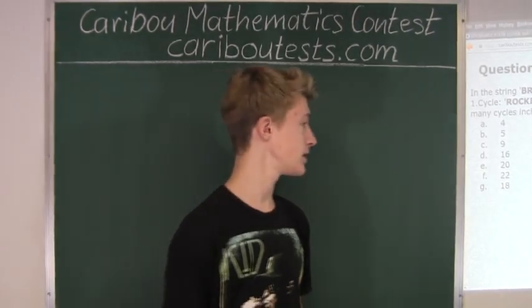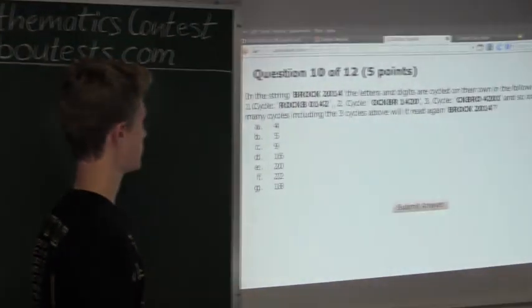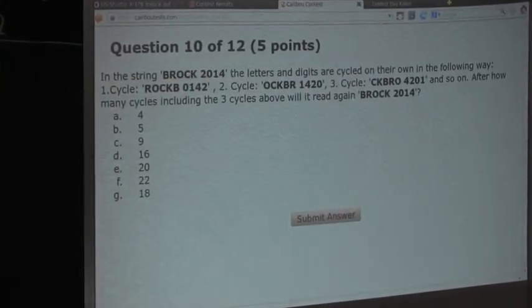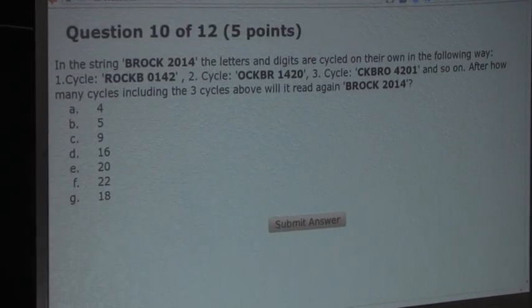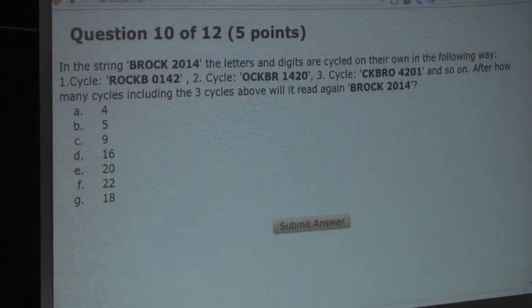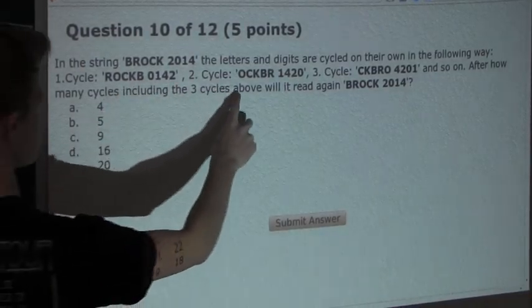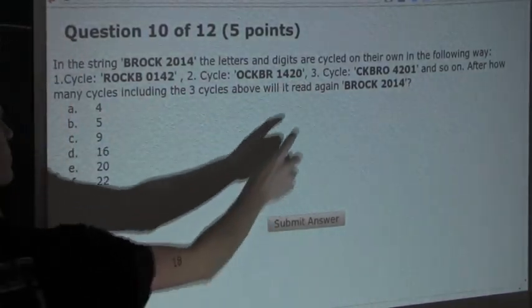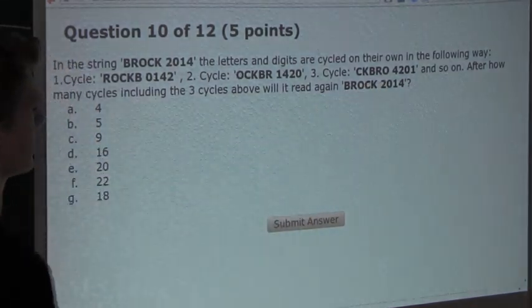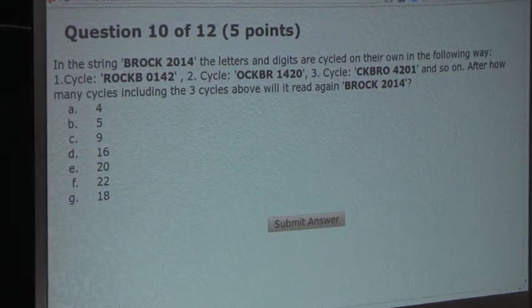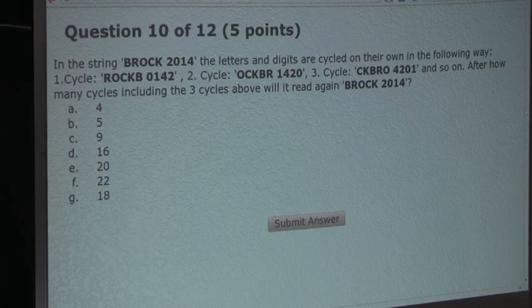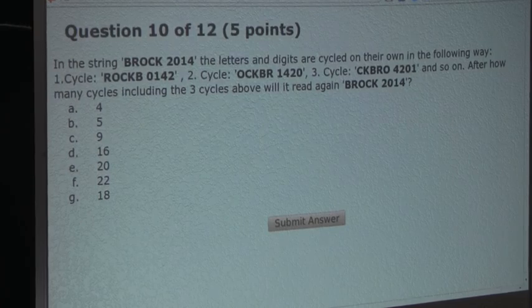Alright, now the question is, in the string BROCK 2014, letters and digits are cycled on their own in the following way. Cycle 1 is shown here, Cycle 2 is shown here, and Cycle 3 is shown there, and so on. After how many cycles, including the three cycles above, will it read again BROCK 2014?